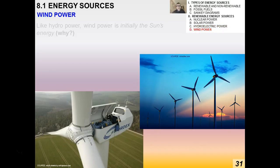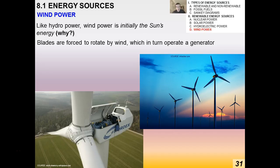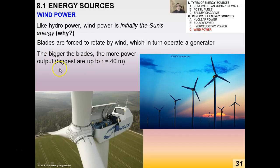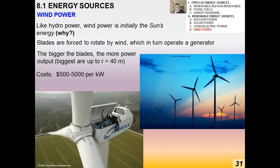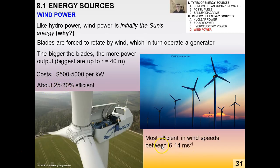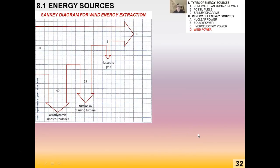Like hydroelectric power, wind power is initially the sun's energy — because all air currents on earth are caused mainly by temperature differentials from incoming solar radiation. Huge wind turbine blades are forced to rotate by wind, which operates a generator producing electricity. Bigger blades mean more power output; the biggest blades in use are up to about 40 meters. Turbines are about 25–30% efficient and most efficient at wind speeds between 6 and 14 m/s.